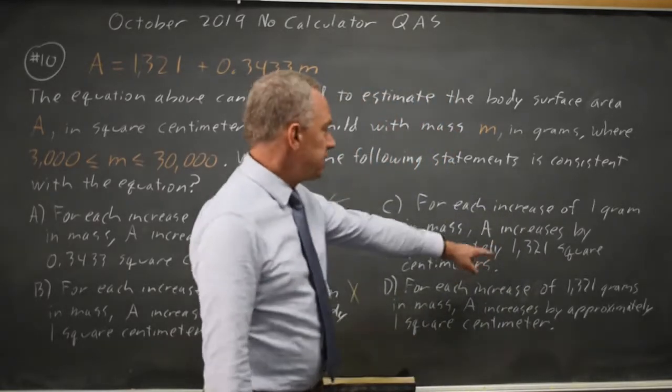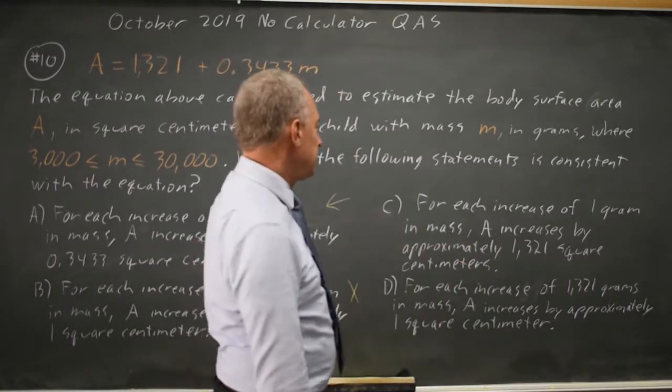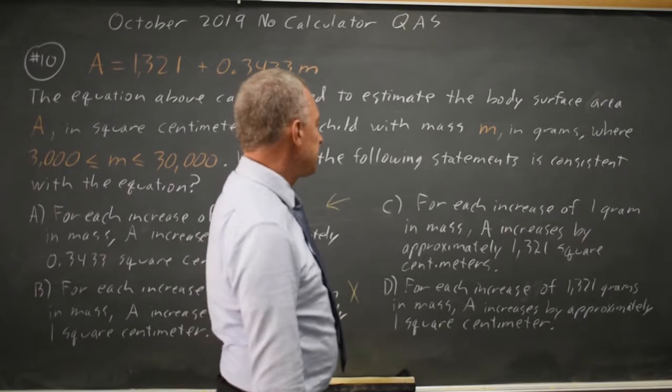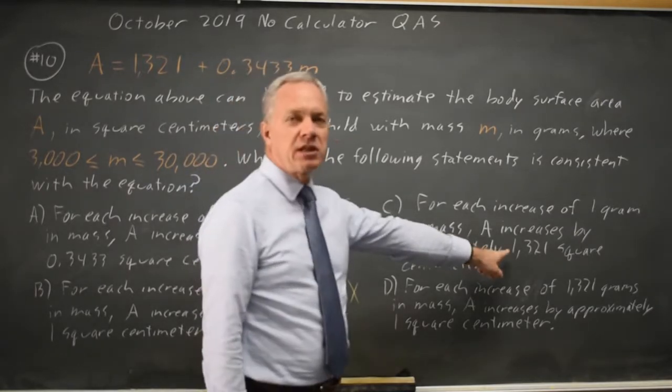Choice C puts in the intercept, and the intercept does not change when mass changes. If M goes up by 1, A goes up by 0.3433, not 1321, so C is not correct.